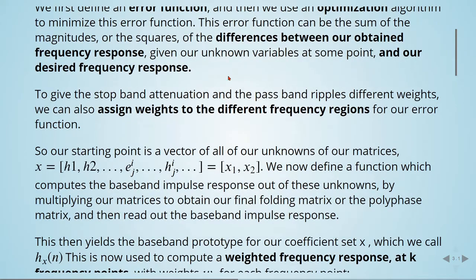Our starting point is a vector of all our unknowns of our matrices, called x. We now define a function which computes the baseband impulse response out of these unknowns by multiplying our matrices to obtain our final folding matrix or the polyphase matrix, and then read out the baseband impulse response.